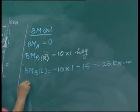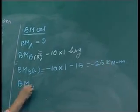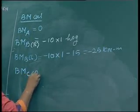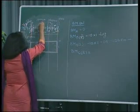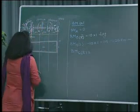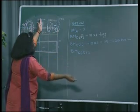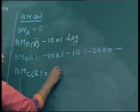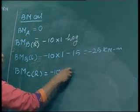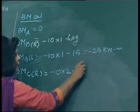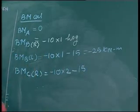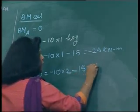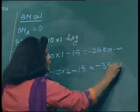Bending moment at point C — again at point C a couple is acting, so we take bending moment just on the right side of C. Put your hand and see on the right side. Forces: 10 and 15. So minus 10 into 2 (distance to C) and second is the couple moment directly — no need to multiply by distance because it is itself a couple moment. So minus 20 minus 15 equals minus 35 kilo Newton meters.